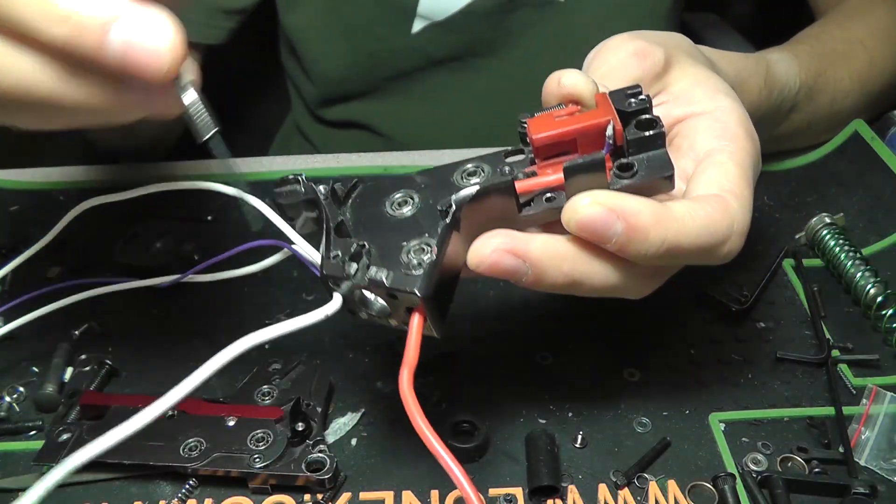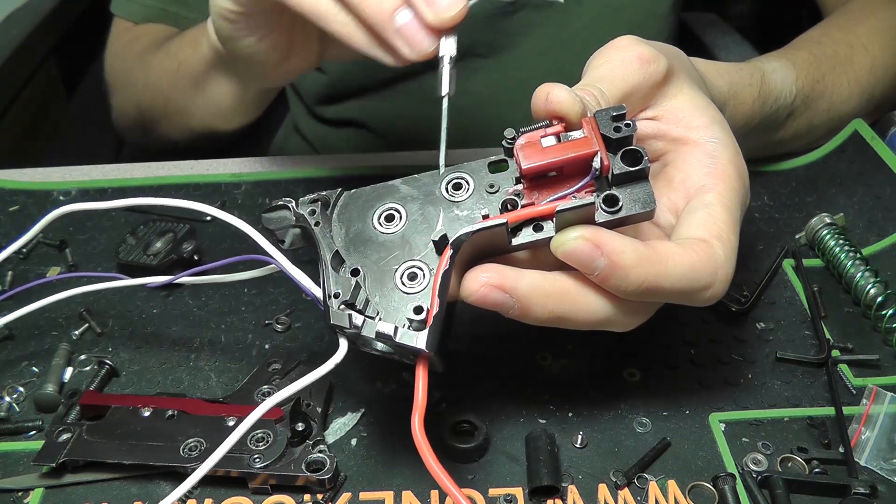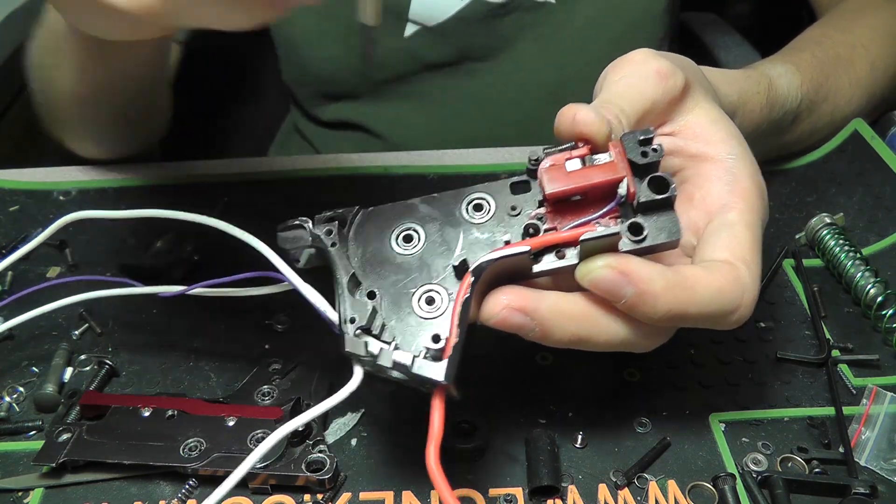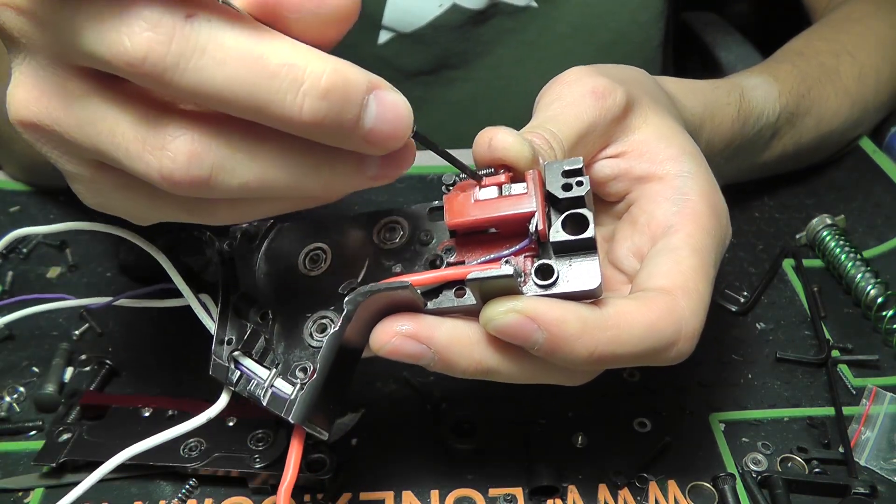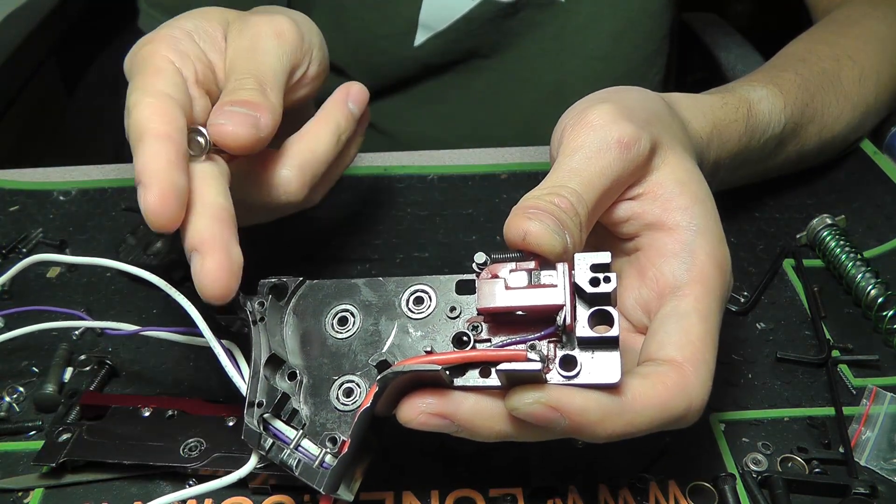These wires send the energy straight to the motor, and it doesn't get sent through here. What the trigger contacts do instead is they act as a signal to either open or close that gate for power.